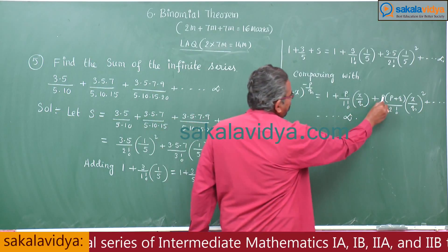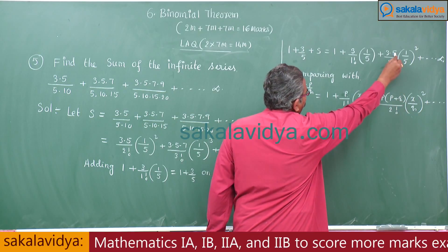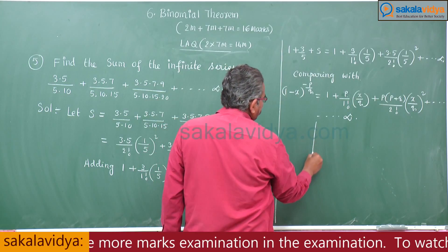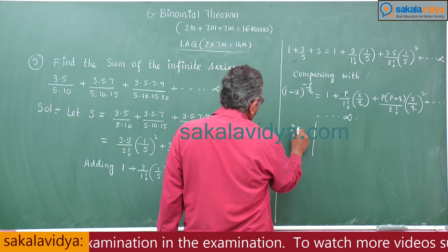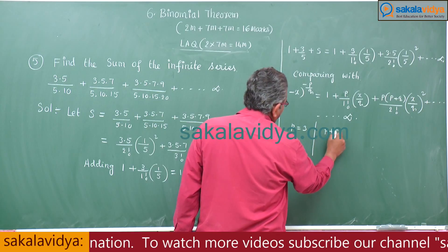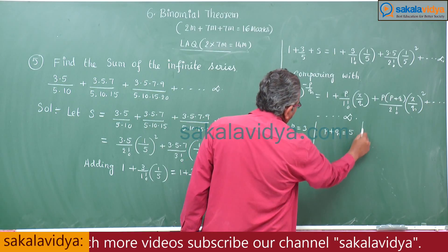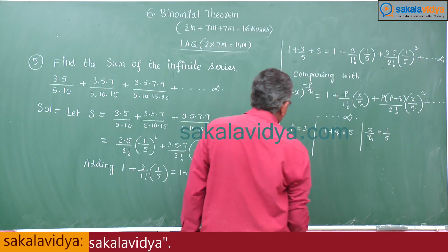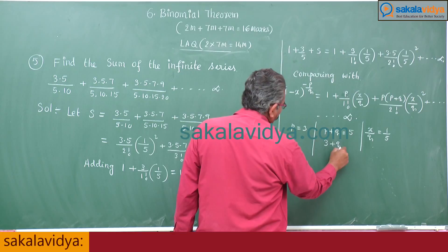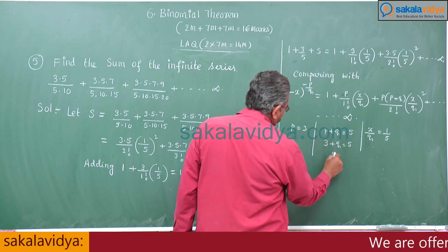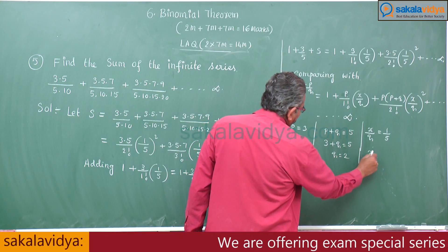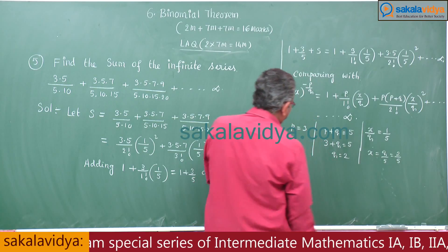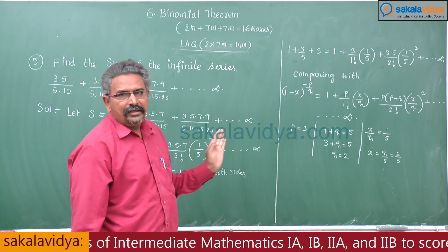Now, p = 3, p + q = 5, x/q = 1/5. From p + q = 5: 3 + q = 5, so q = 2. Then x = q/5 = 2/5. We now know all of x, p, and q values.